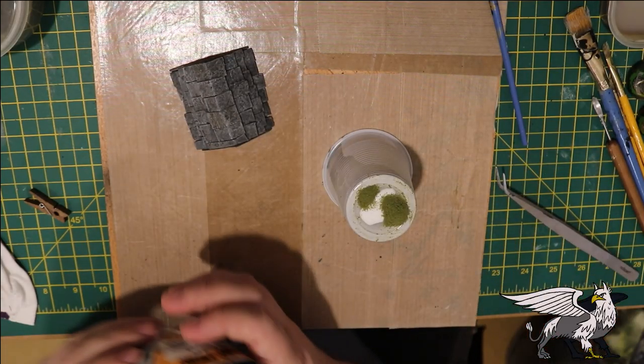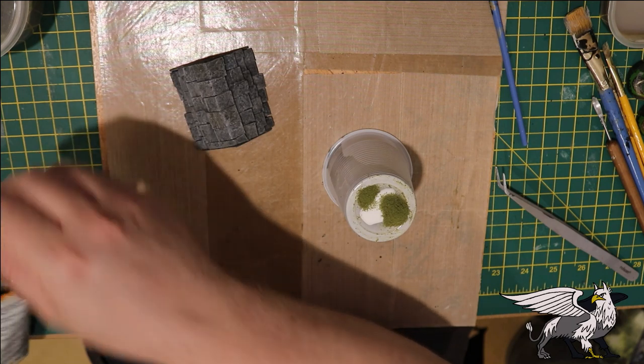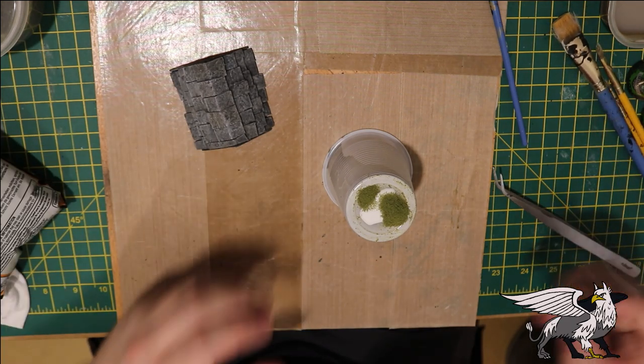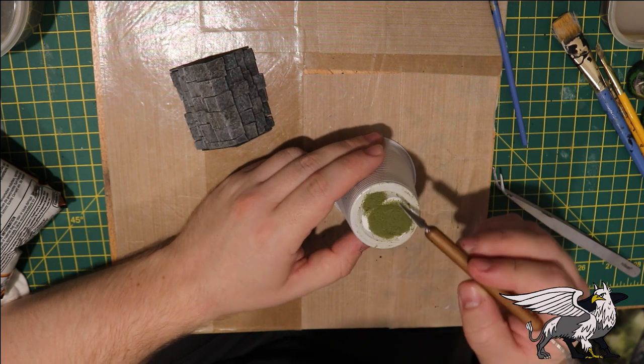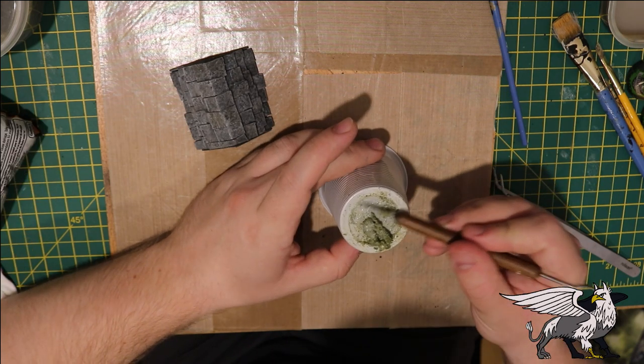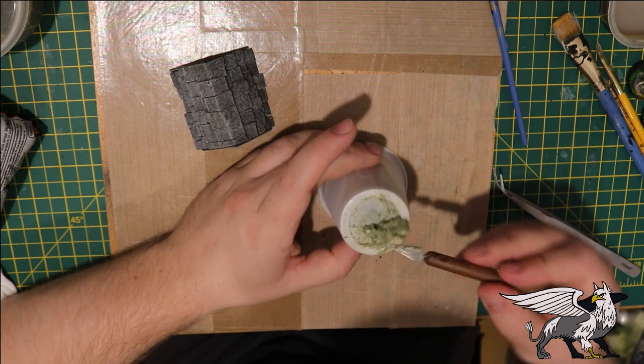Now you might know from some of my other videos that I absolutely love putting moss on things. So I'm using Woodland Scenics Fine Turf Burnt Grass, and I'm mixing that with some PVA glue. This is my usual method for making moss, mix it into a paste like this.